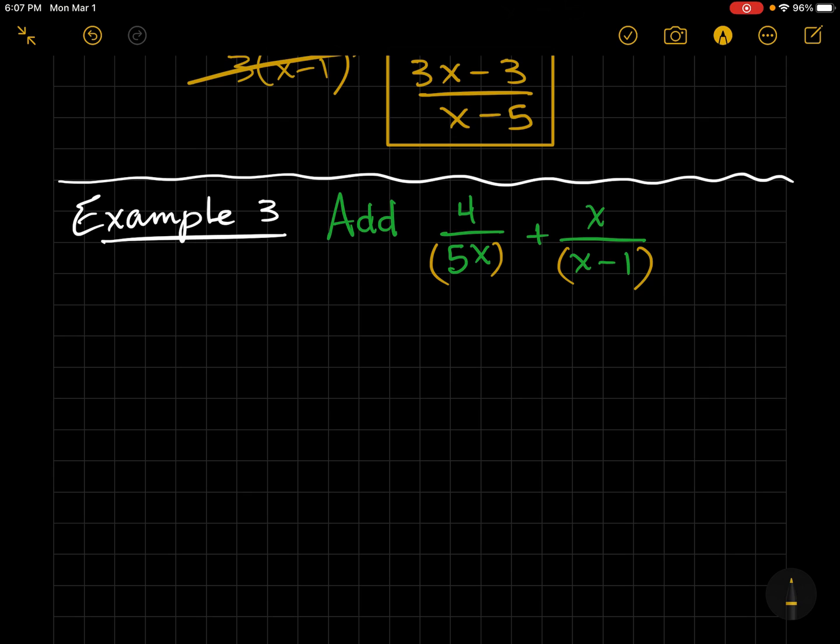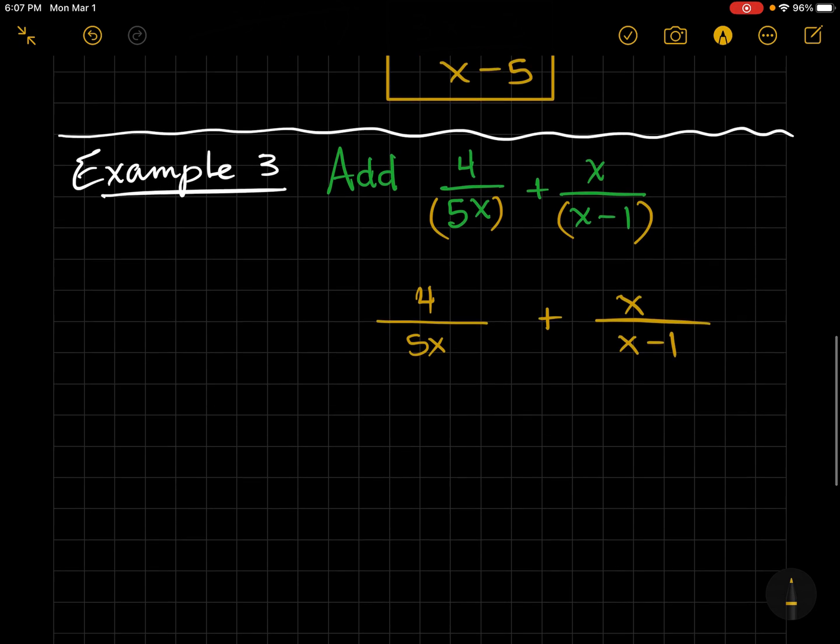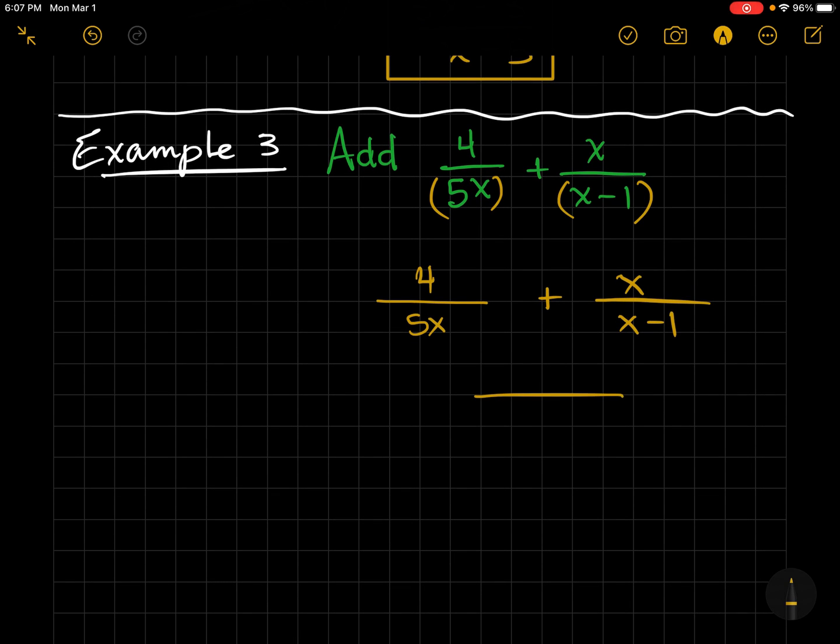So what I'm going to do now is I'm going to spread my fractions out a little bit, give myself some room, and I like to rewrite the fractions, but I like to spread them out. So now, for my common denominator, I'm just going to do 5x times x minus 1. So notice I'm just using both. And I like to use lots and lots of parentheses.